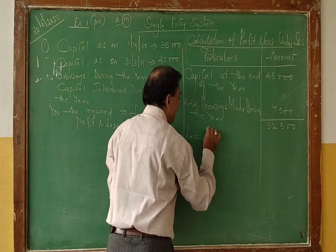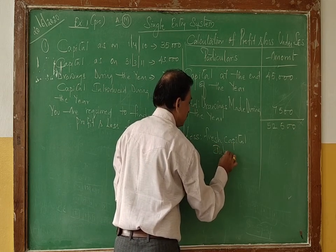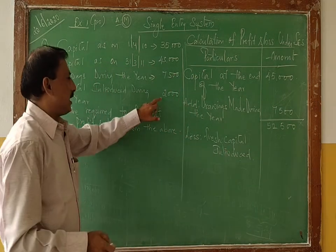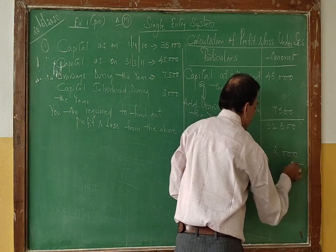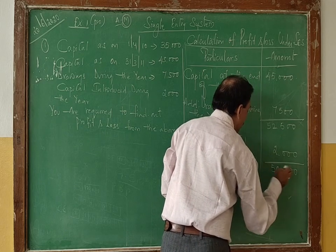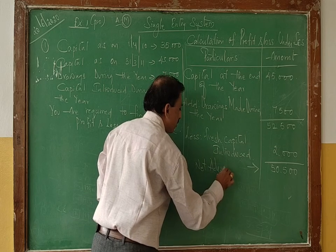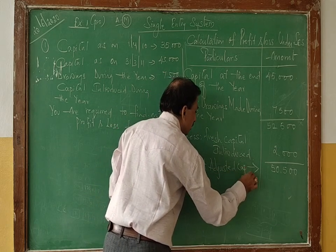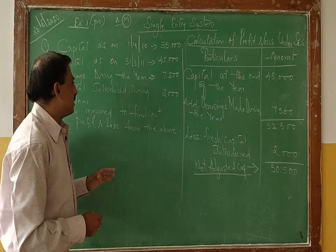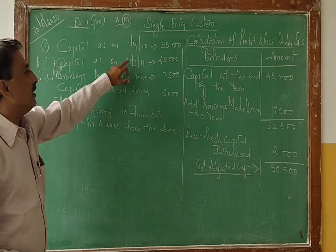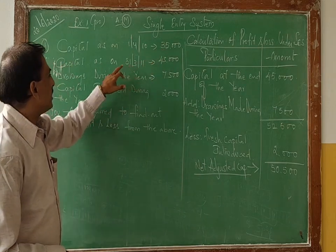From 52,500, we deduct the fresh capital introduced. The capital introduced during the year is 2,000. Deducting that, we get the net adjusted capital.